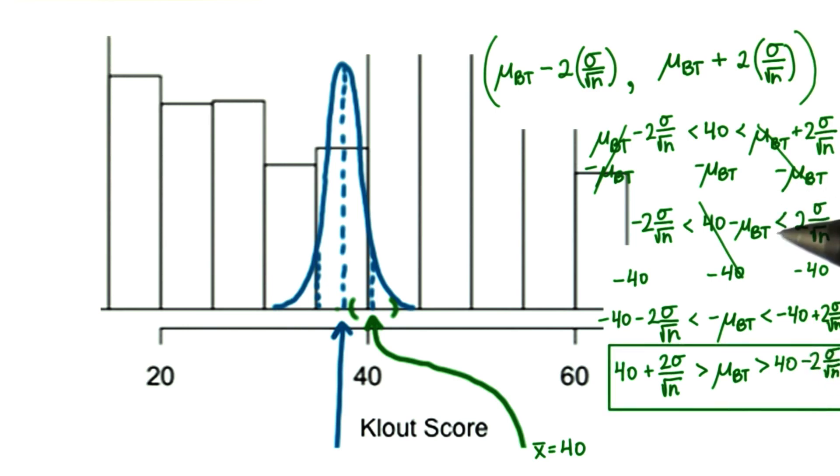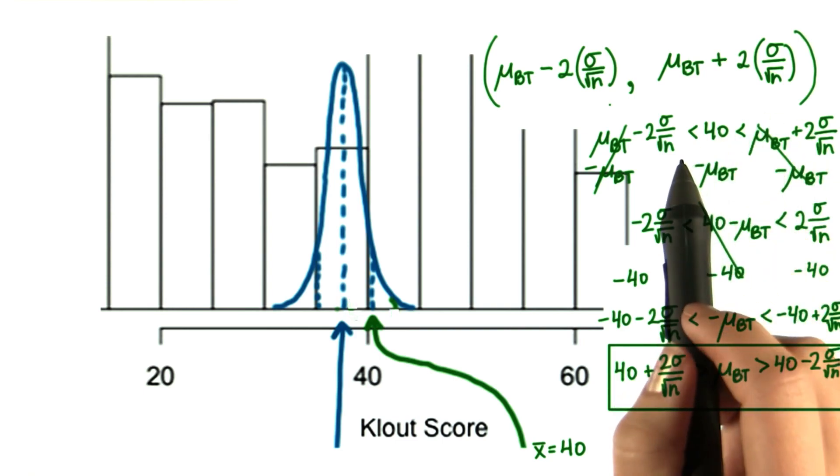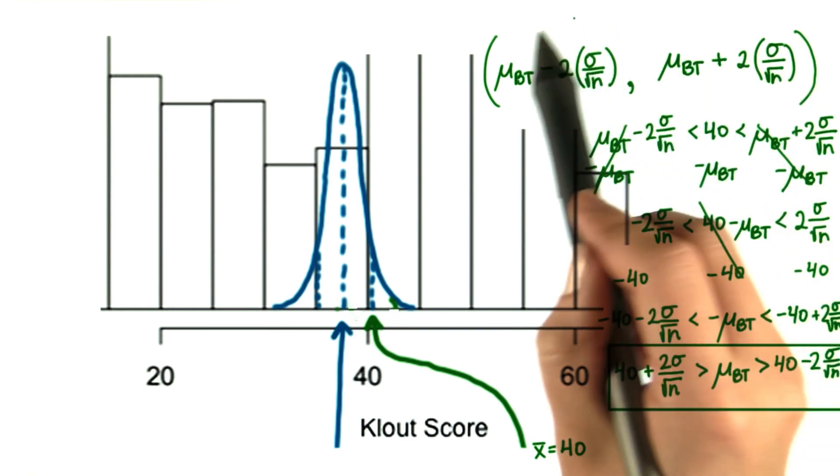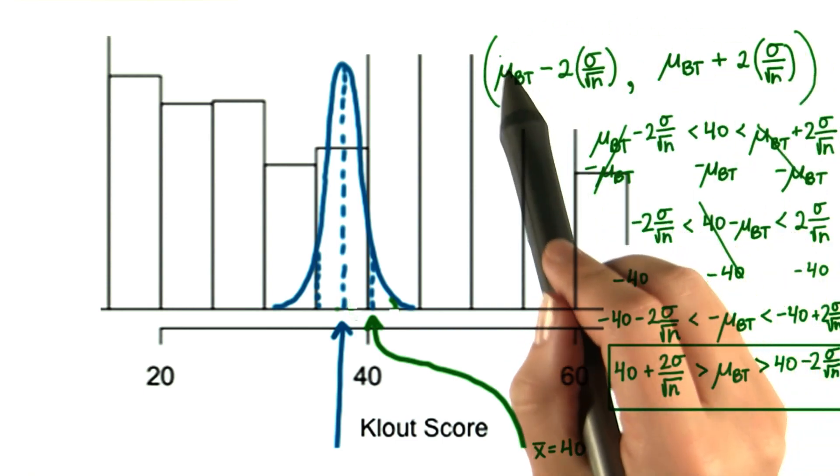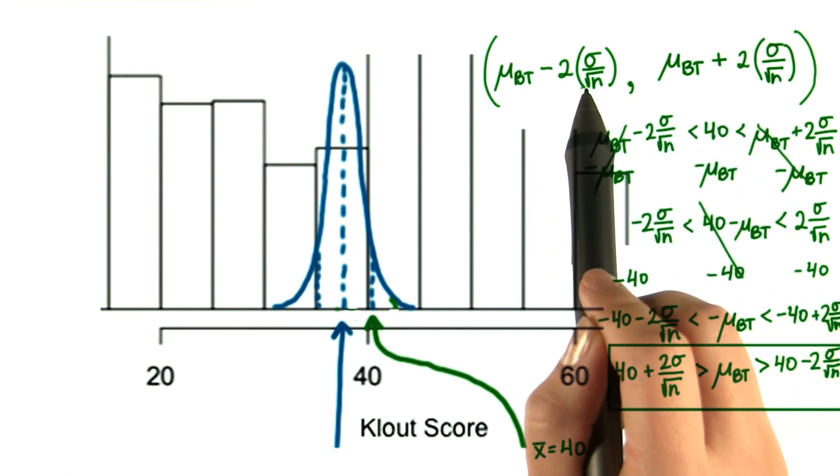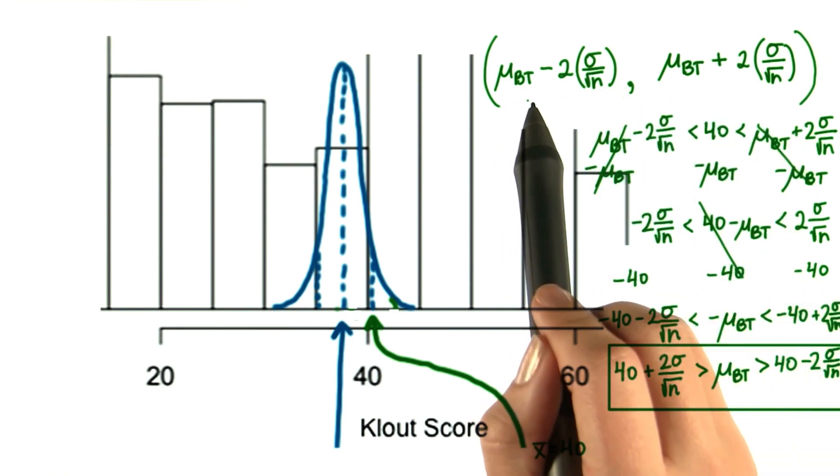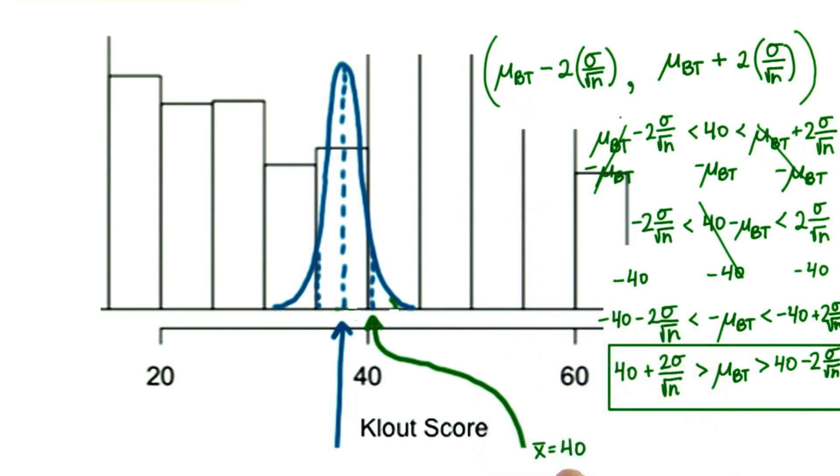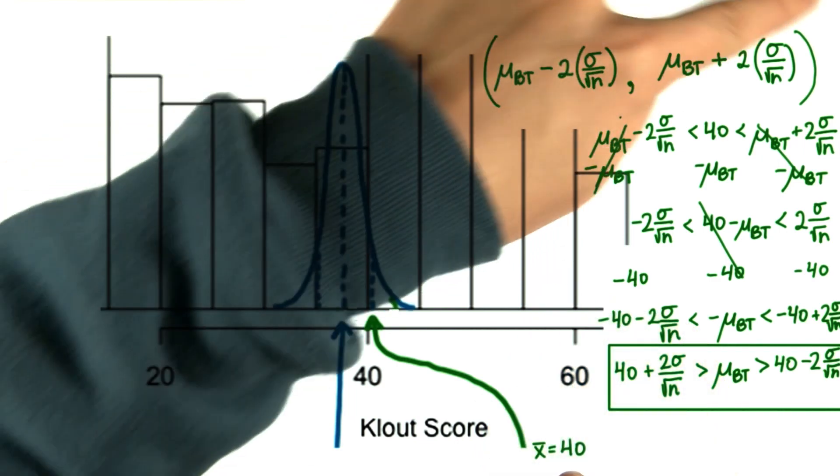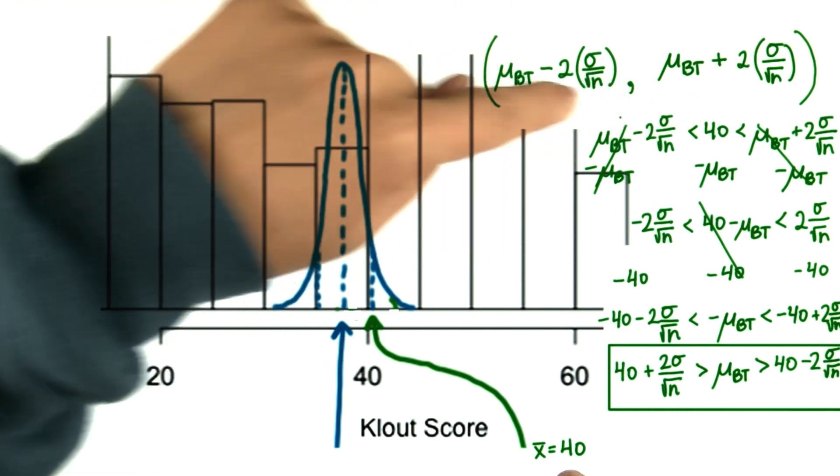And now we have this gorgeous interval. So let's recap really quick. We know that 95% of sample means will fall within two standard errors of the population mean. We're guessing that the sample mean we have is one of those 95% that falls within this interval.